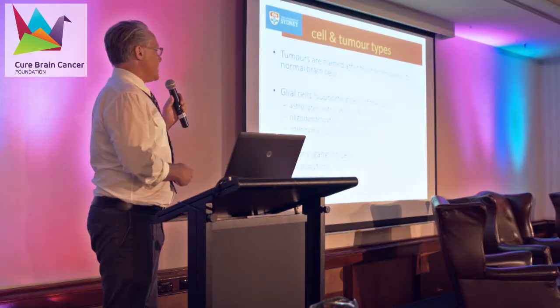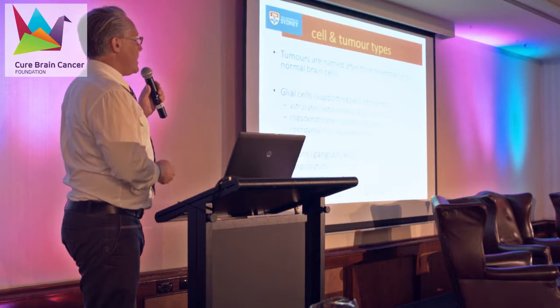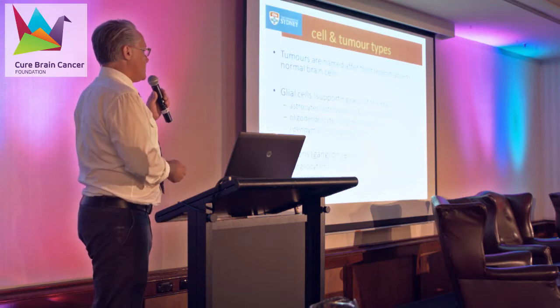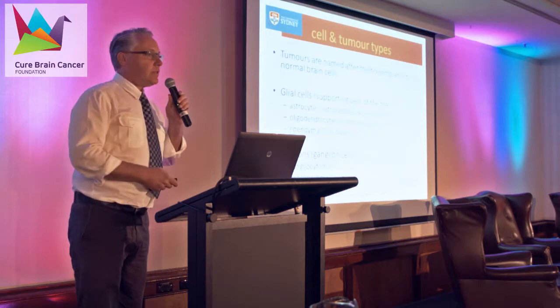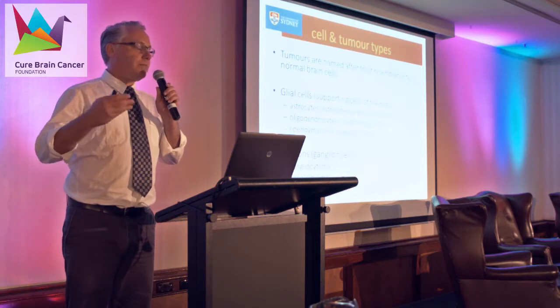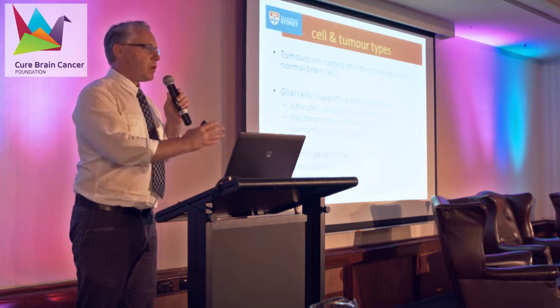Of the glial cells there are different types we can recognise in normal brains. There are the astrocytes — if the tumour looks like malignant astrocytes it's called an astrocytoma, or if it's particularly bad it's called a glioblastoma. Then there are oligodendrocytes, which are very important in the normal brain because they provide the coating of all the nerve cell processes — they're like insulation on electrical wires. If the tumour looks like malignant oligodendrocytes, it's called an oligodendroglioma.